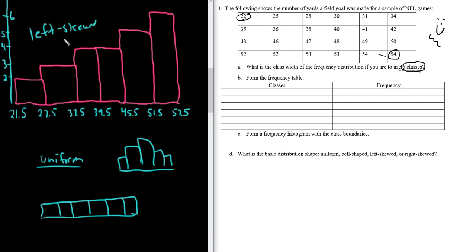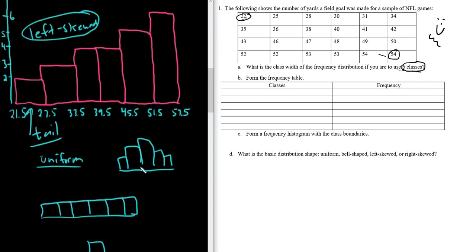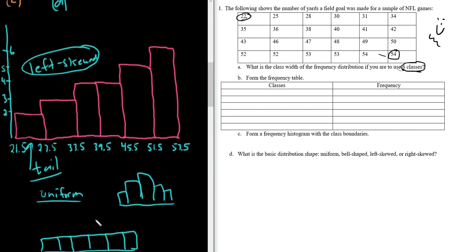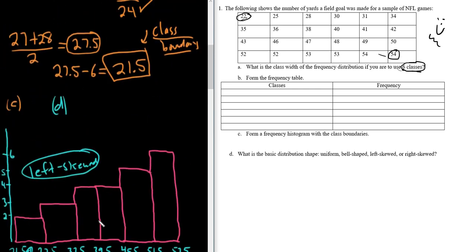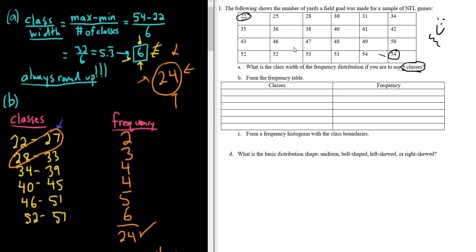The way I remember skewness: the skinny part is called the tail. If the tail is to the left, it's skewed left. If it looks like the tail is to the right, it's skewed right. Tail to the left = skewed left; tail to the right = skewed right. Lots of information in this video — over 11 minutes — but it's not hard, it just takes a little time. Good luck!